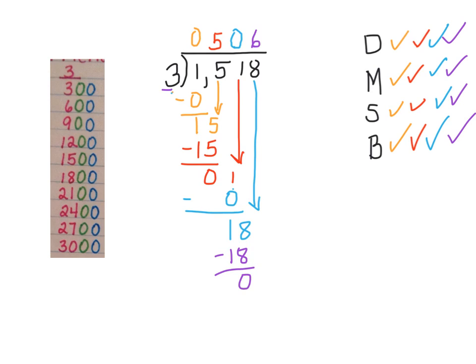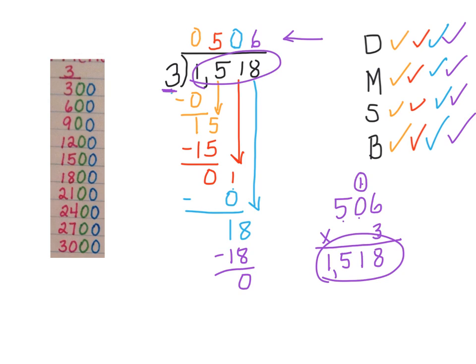I just go back and check my work. Look at my quotient, 506. I multiply it by the 3 that I was dividing by. 3 times 6 is 18. 3 times 0 is 0, plus 1 is 1. 3 times 5 is 15. And I get the same number that I started with. So I know that 506 is the correct quotient.